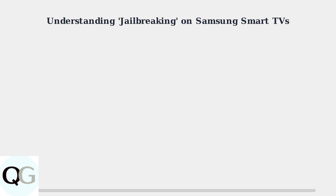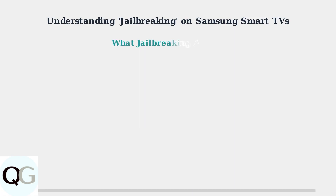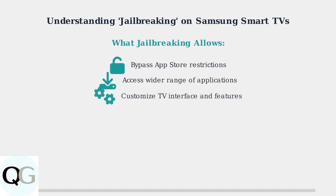When we talk about jailbreaking Samsung Smart TVs, we're referring to a specific process that modifies how your television operates at its core level. Jailbreaking a Samsung Smart TV means gaining root access to the Tizen operating system and installing applications that aren't available through the official Samsung App Store. This process allows users to bypass the restrictions of Samsung's official app ecosystem, access a much wider range of applications, and customize their television's interface in ways not normally possible.